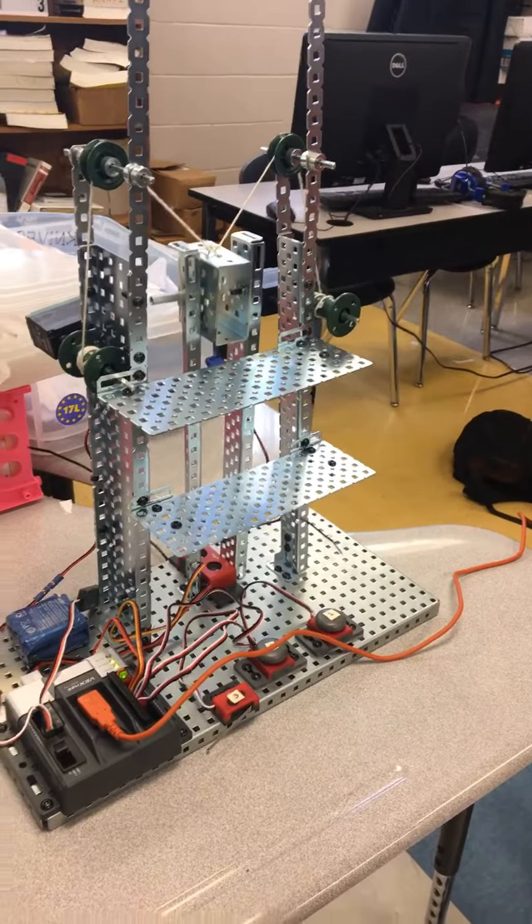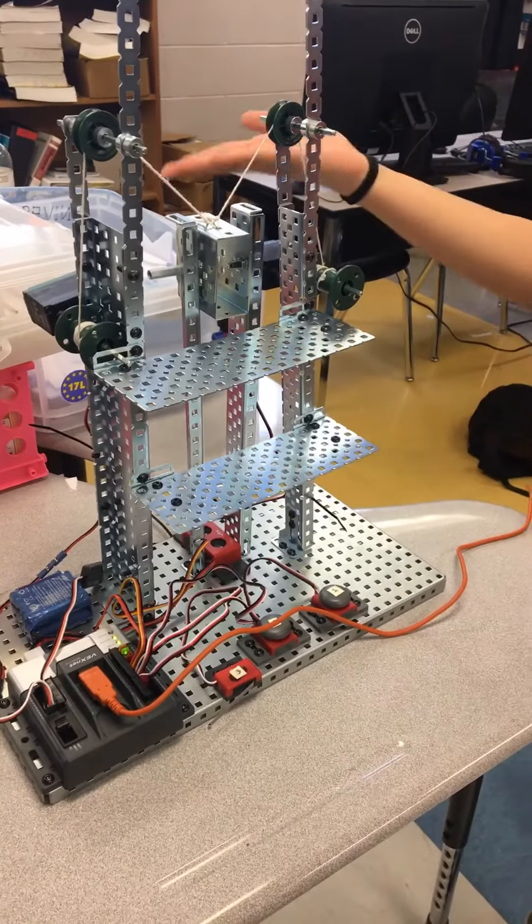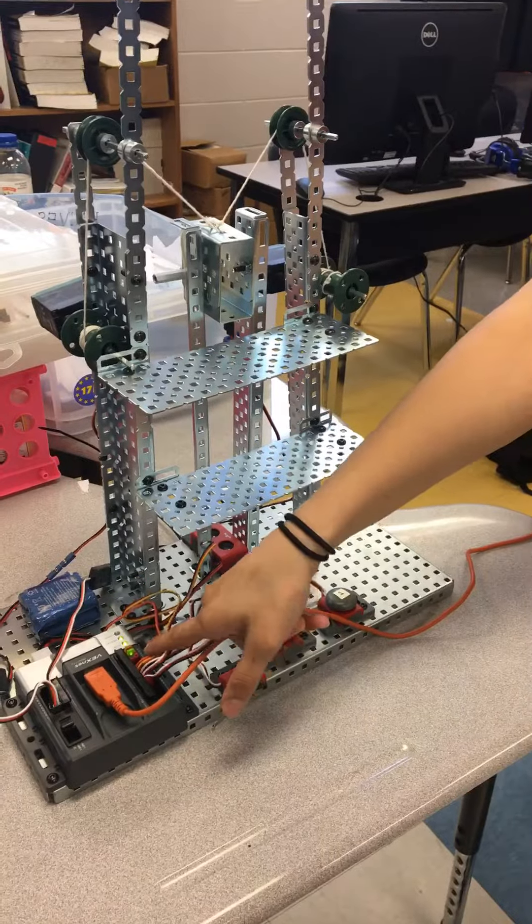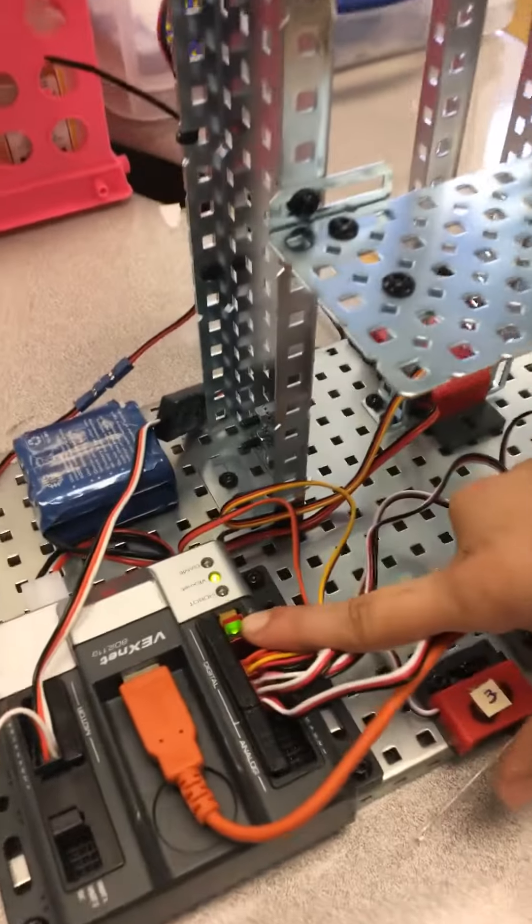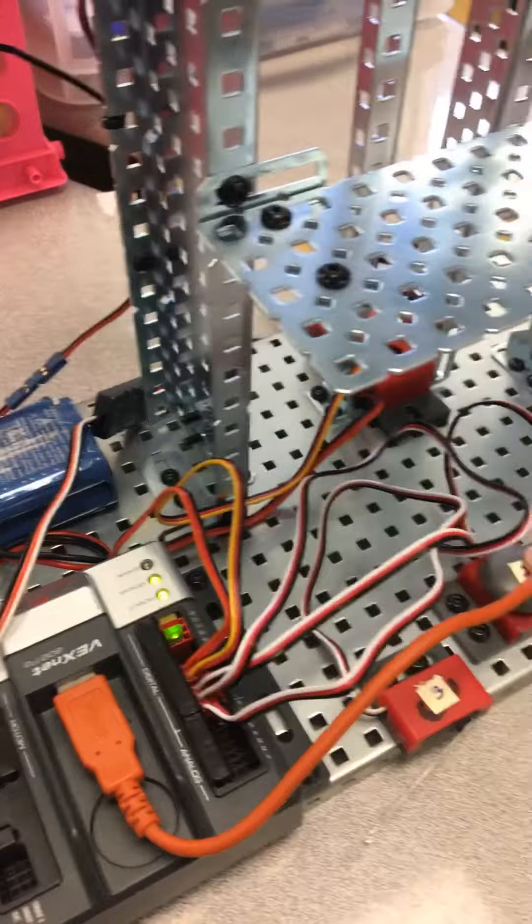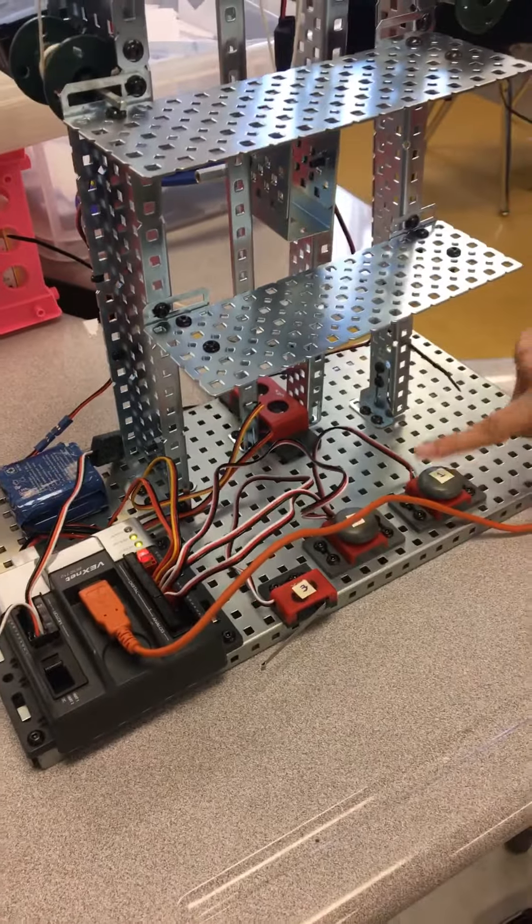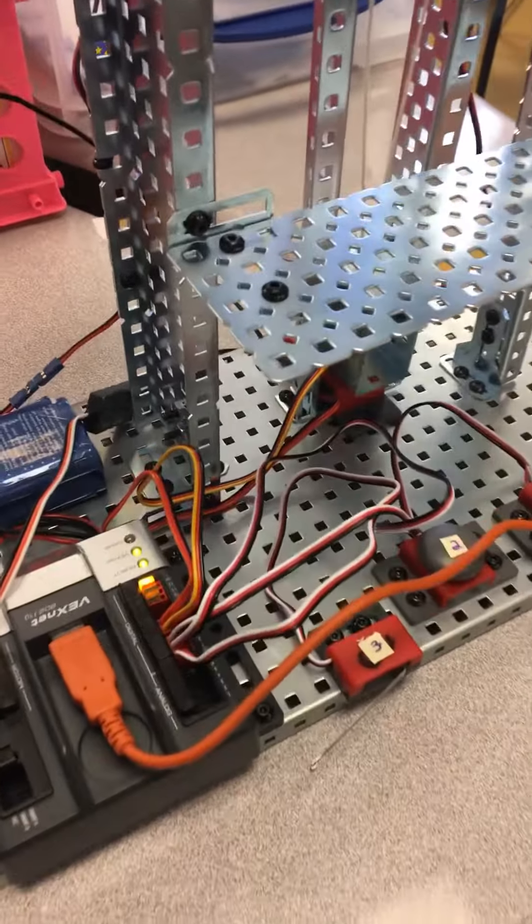The ultrasonic sensor will sense when it's gotten there. And then these LEDs indicate which floor it's on. So the red is for the second and the yellow is for the first.